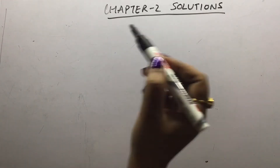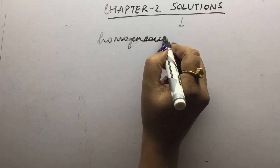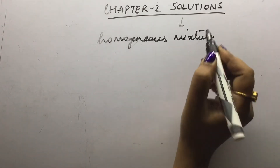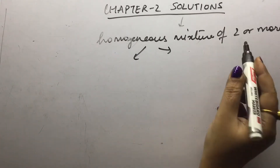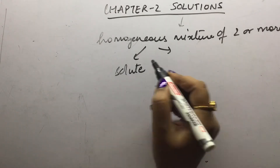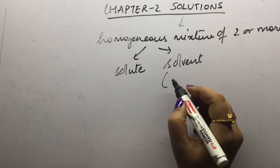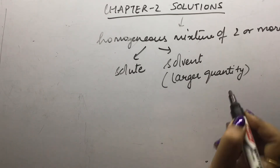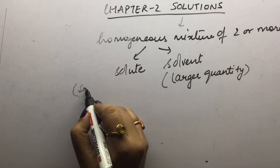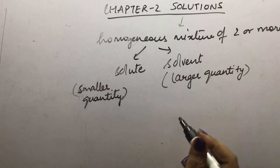Today we will start with Chapter 2: Solutions. First, we will understand what solutions are. Solutions are homogeneous mixtures of two or more components, in which the two components are either solute or solvent. The component present in the larger quantity is called the solvent, and what is present in the smaller quantity is called the solute. If there is one solute and one solvent, we call it a binary solution.